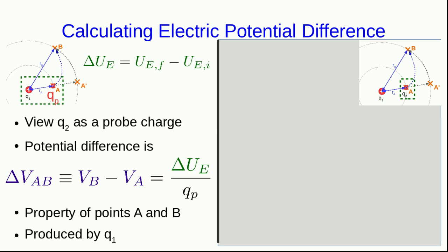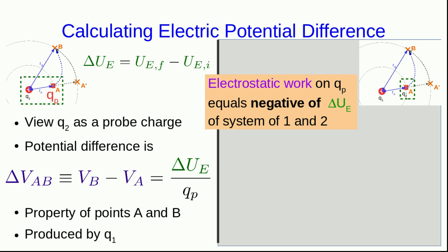Alternatively, we could define it in terms of electrostatic work. Instead of thinking of the system of the charge which is the source charge and the probe charge, we simply think of it in terms of the work done on a probe charge as we move it around. And then we know that the work done is the negative of what the change in potential energy would be for the system of charges.